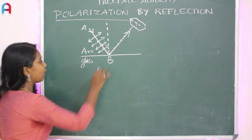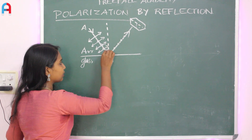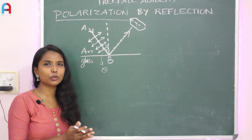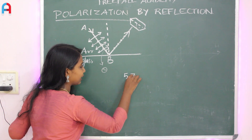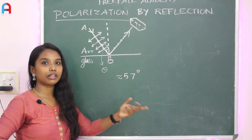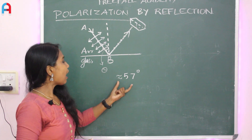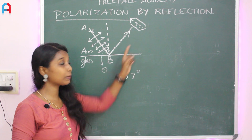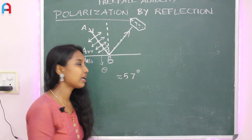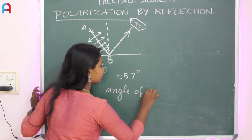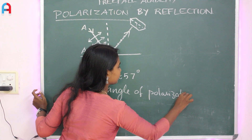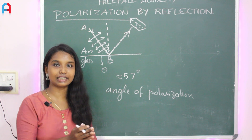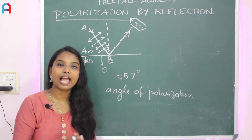Now, here is the angle of incidence. This angle of incidence represents theta. The angle of incidence is a particular angle — approximately 57 degrees. The refractive index is 1.5. The angle of incidence is called the angle of polarization.